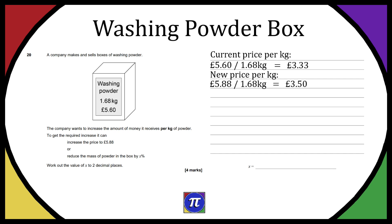The question asks: what weight change is equivalent to the £5.88 price increase? In other words, since the new target price per kilo is £3.50, what weight do we need? Here's the formula: old price divided by new weight equals £3.50 per kilo. So we have £5.60 divided by (1.68 kg × x) = £3.50.